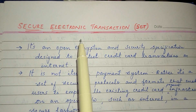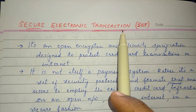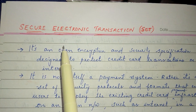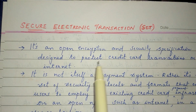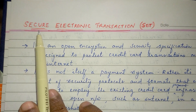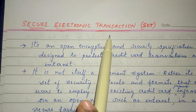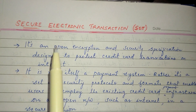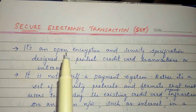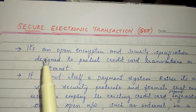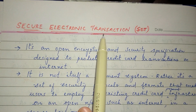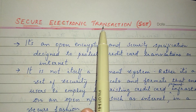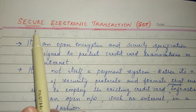Next is Secure Electronic Transaction, or SET. Now we have web security. Secure Electronic Transaction, SET. This credit card transaction is protected. This is an encryption. This is a security specification. This is SET.